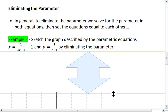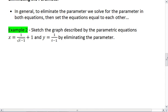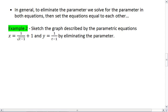Let's look at this example, because examples are the easiest way to show this. We're going to sketch the graph described by the parametric equations x equals 1 over the square root of t minus 1 plus 1, and y equals 1 over t minus 1, by eliminating the parameter.